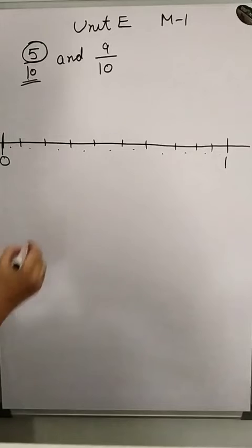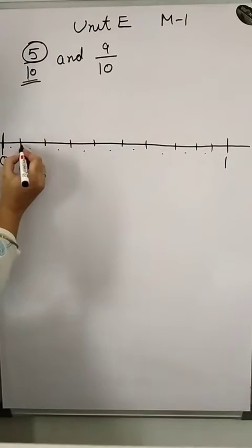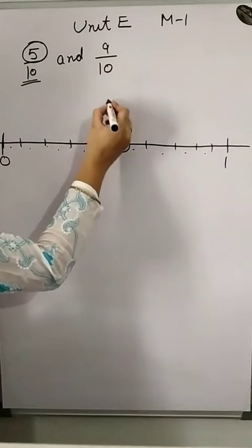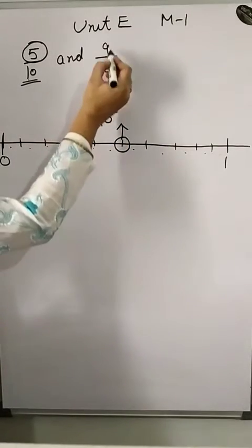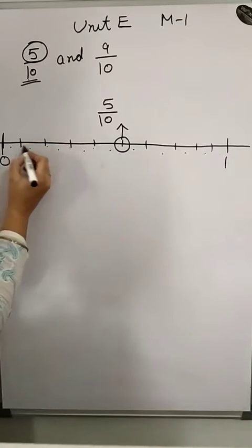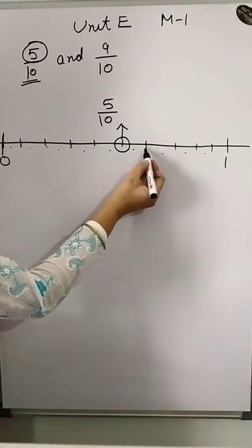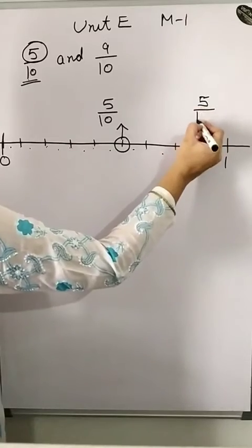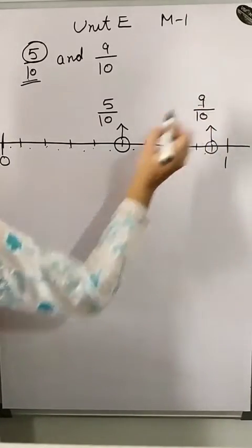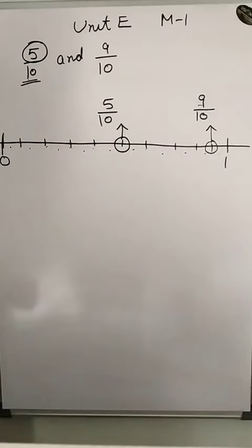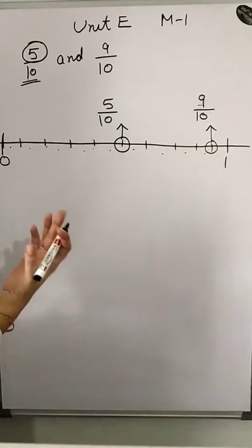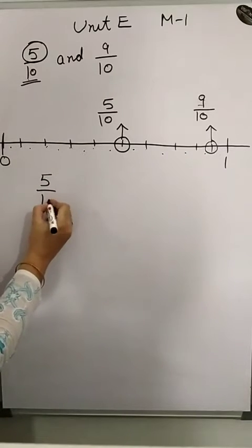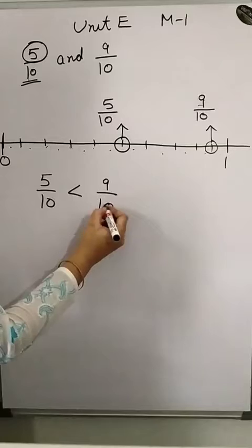The first number is 5 upon 10, so we go to the 5th line after 0: 1, 2, 3, 4, 5 — this is 5 upon 10. For 9 upon 10, we go to the 9th line: 1, 2, 3, 4, 5, 6, 7, 8, 9. So 9 upon 10 is farther from 0 than 5 upon 10, meaning 5 upon 10 is smaller than 9 upon 10.